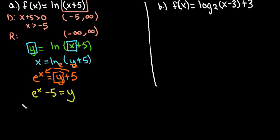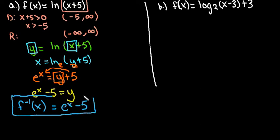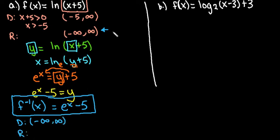We write this in function notation: f inverse of x equals e to the x minus 5. This is our inverse function. Remember, the domain of our inverse equals the range of the original function. So the domain for this exponential inverse is negative infinity to positive infinity. The range of the inverse equals the domain of the original, so it would be negative 5 to positive infinity. This inverse would have a horizontal asymptote at negative 5.